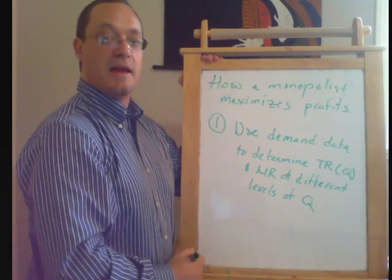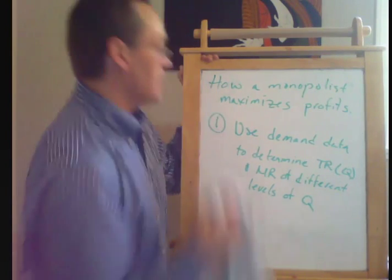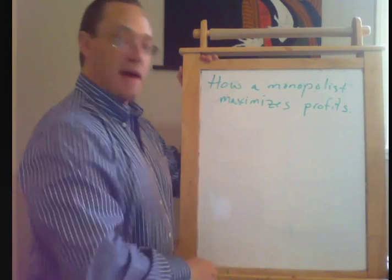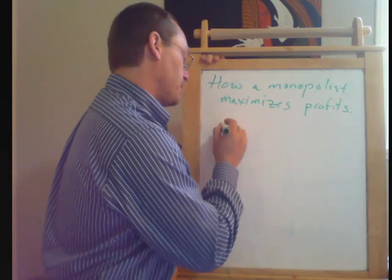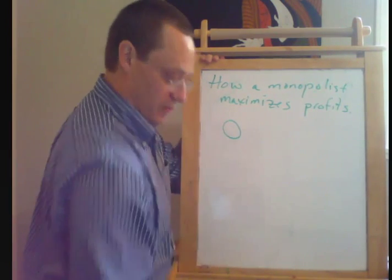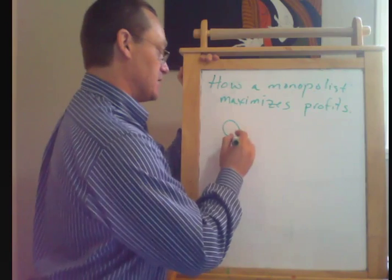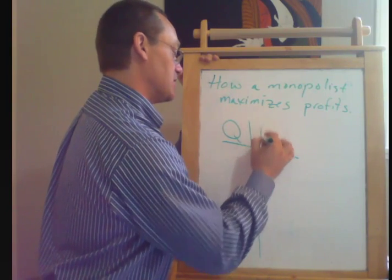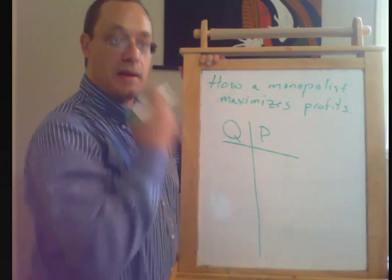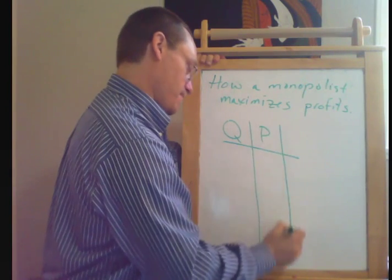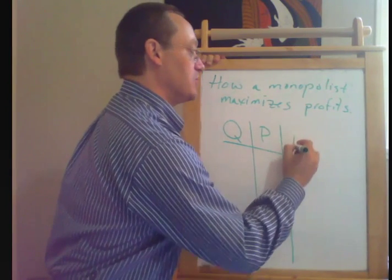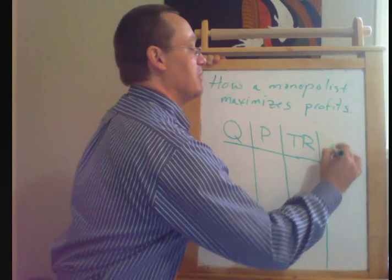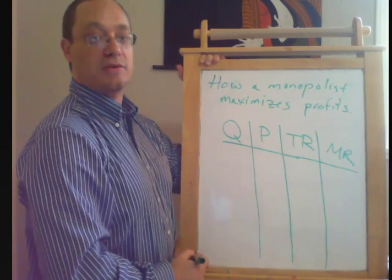So I'm going to go ahead and do a little example here for you guys. So what do we mean by all that? Up until now, we've often looked at the demand curve as a function of the price. Now we're going to go the other way around and we're going to look at price as a function of quantity. Then we're going to use that information to determine total revenue, and then we're going to use that information to determine marginal revenue.